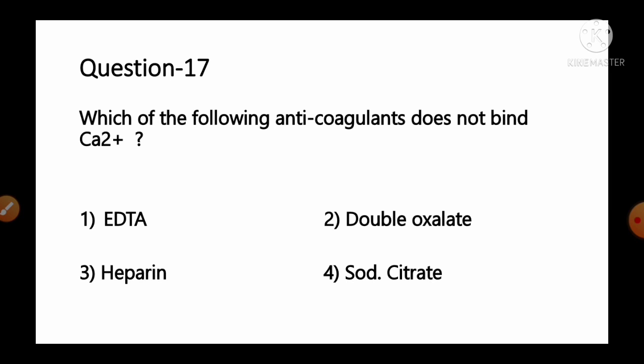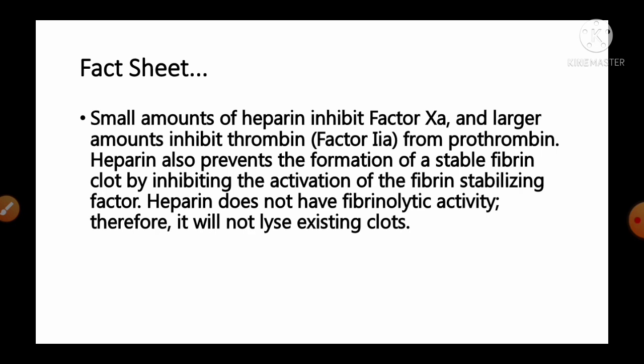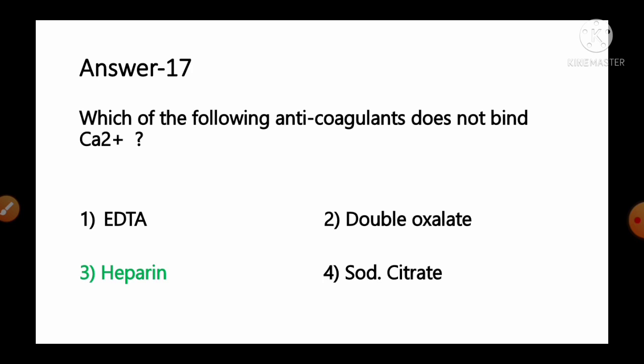Question number 17: Which of the following anticoagulants does not bind with calcium? Options: 1) EDTA, 2) double oxalate, 3) heparin, 4) sodium citrate. Heparin inhibits factor Xa and thrombin, and prevents stable fibrin clot formation by inhibiting fibrin stabilizing factors. Heparin does not have any fibrinolytic activity and does not chelate calcium. EDTA, sodium citrate, and double oxalate all chelate calcium. So option number 3, heparin, is the correct answer.